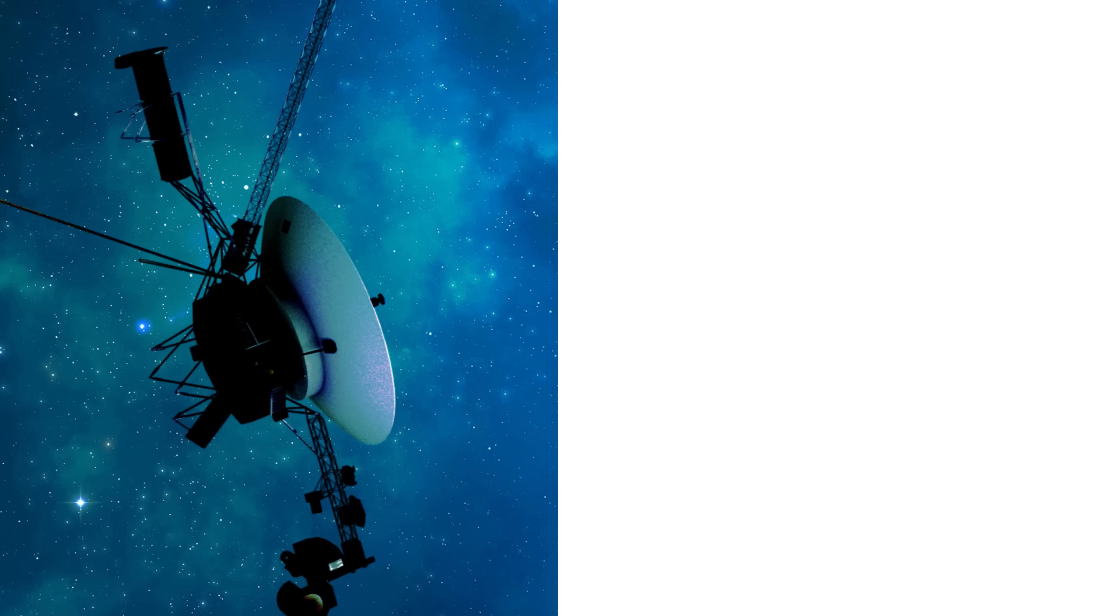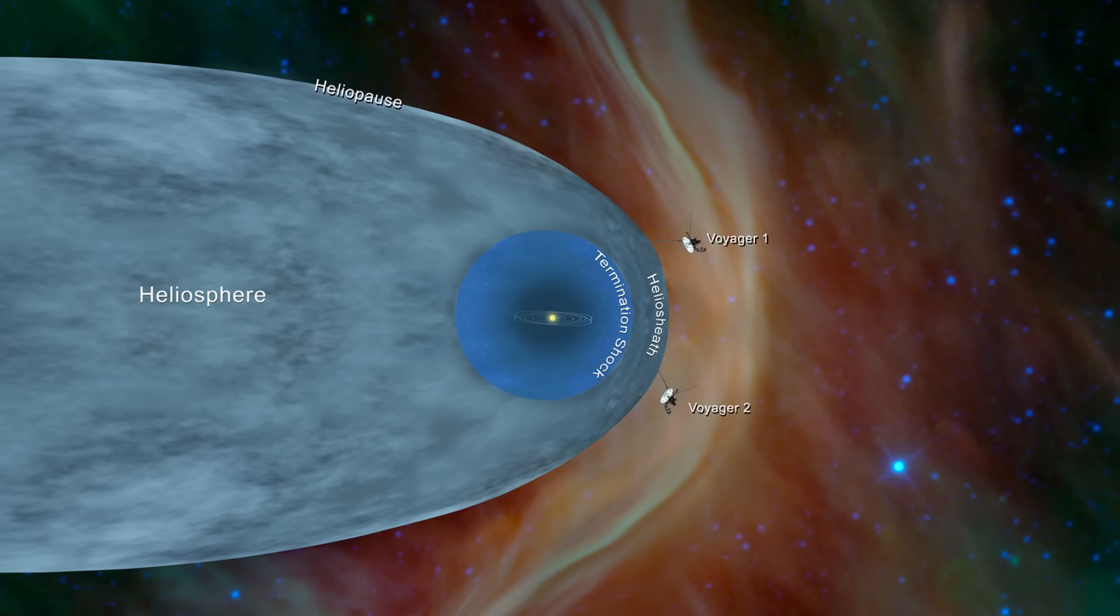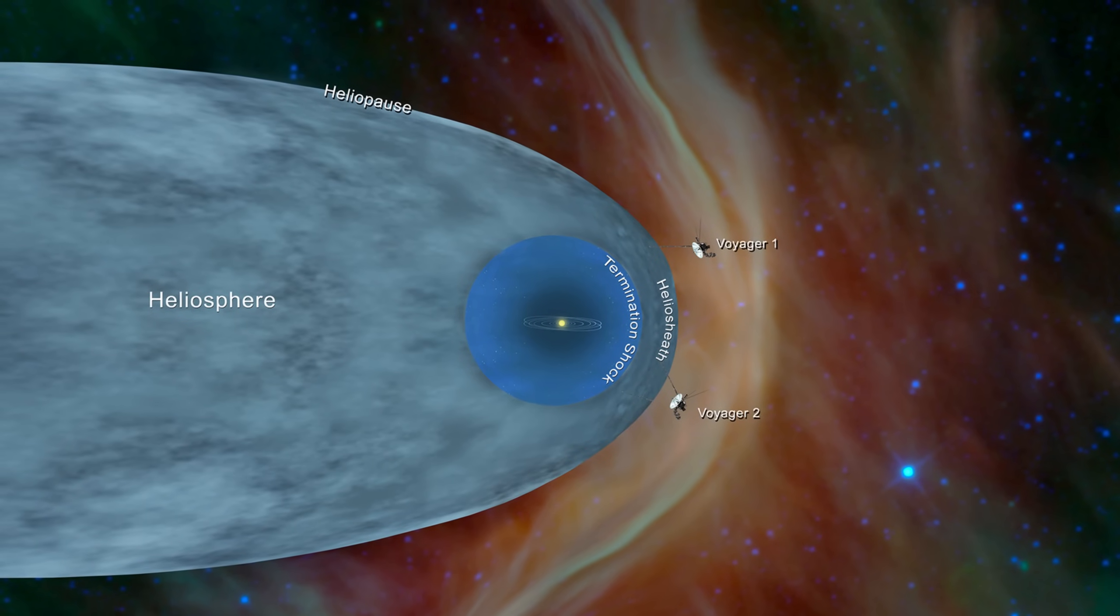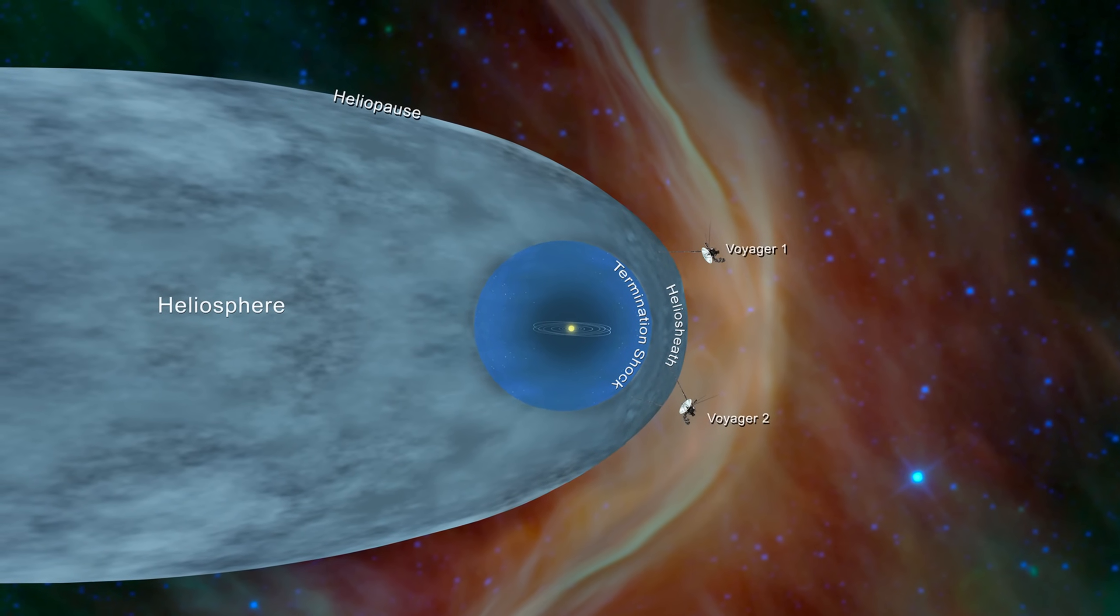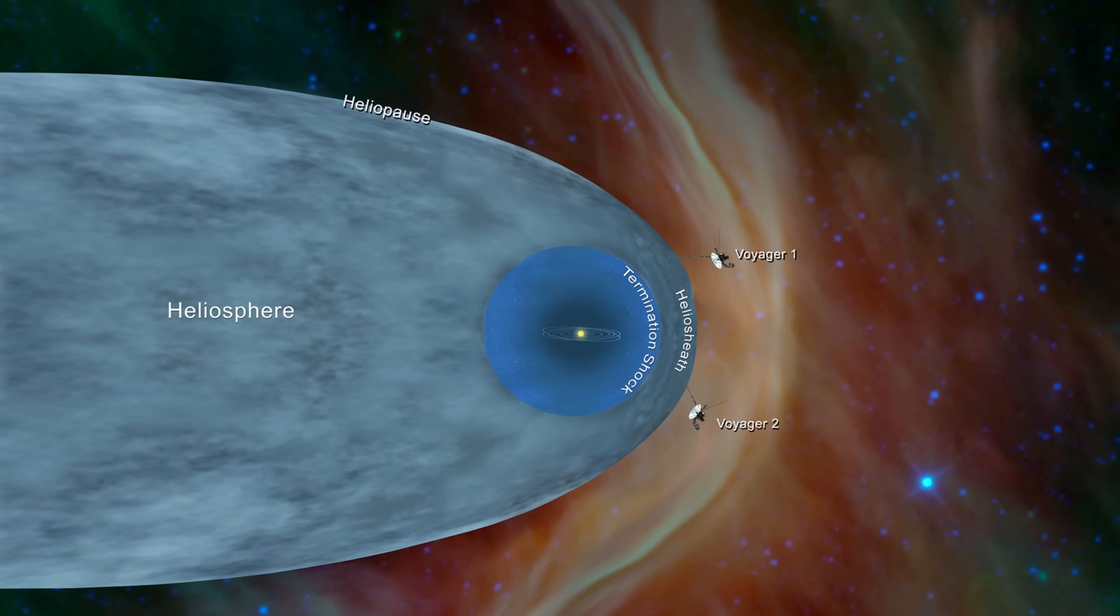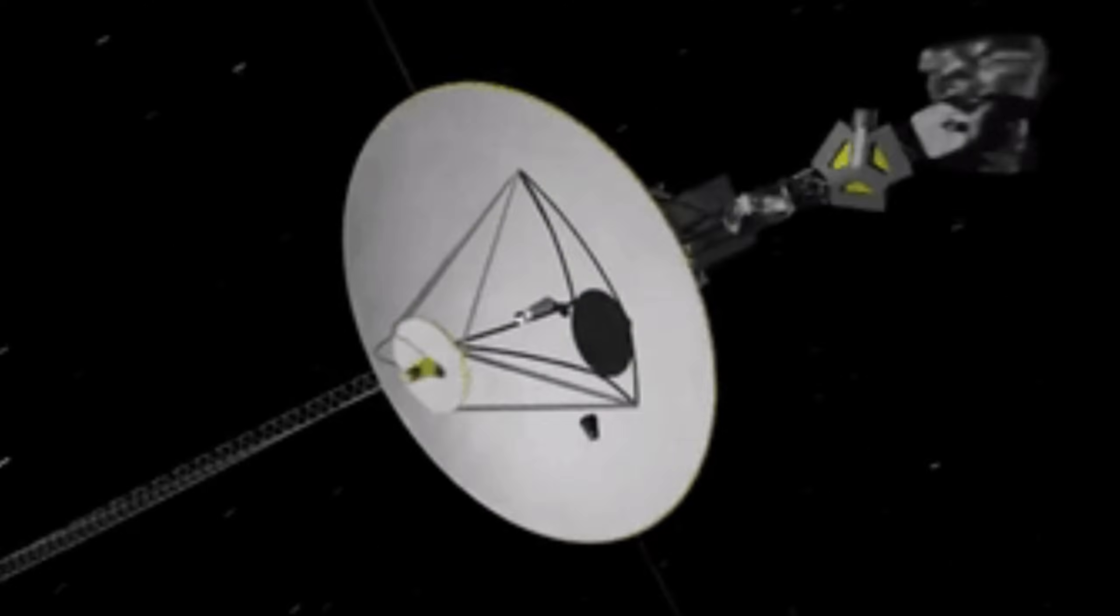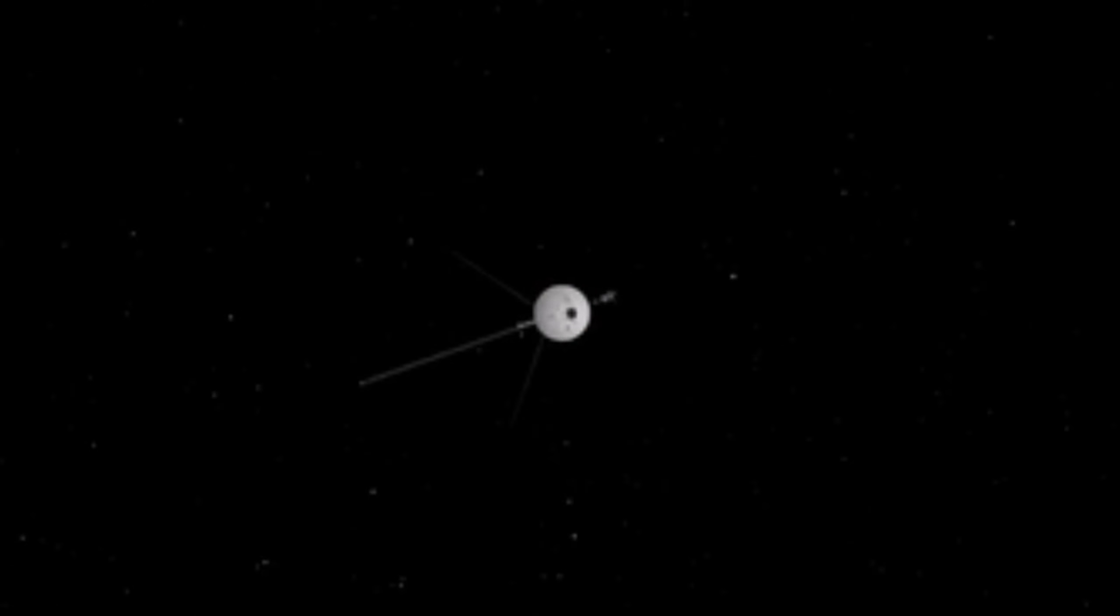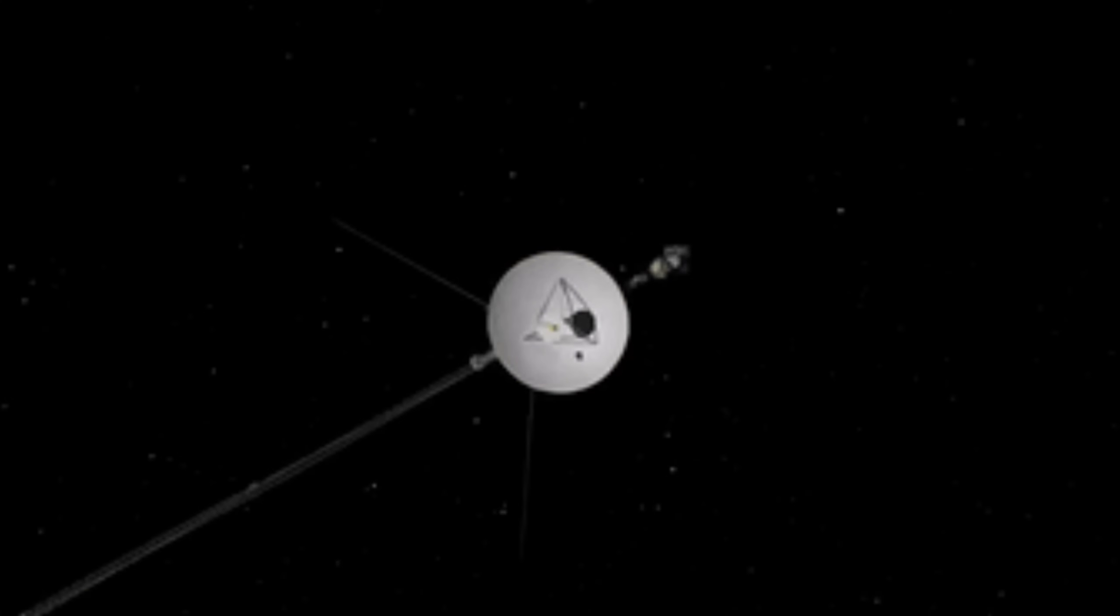By 2030, Voyager power will likely be insufficient to run any of its scientific instruments, meaning the probes will become silent, no longer transmitting data back to Earth. At that point, they'll continue their journey through interstellar space as time capsules, carrying their golden records as messages to any future civilizations that may encounter them.